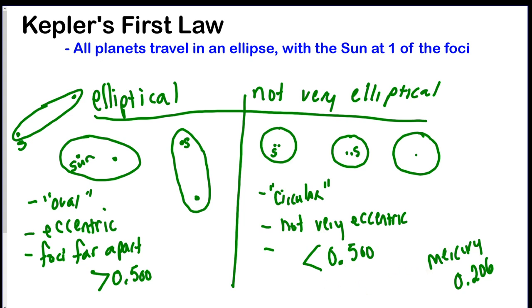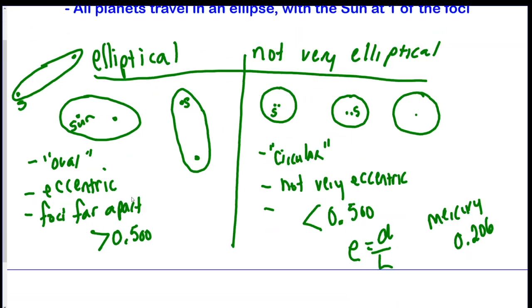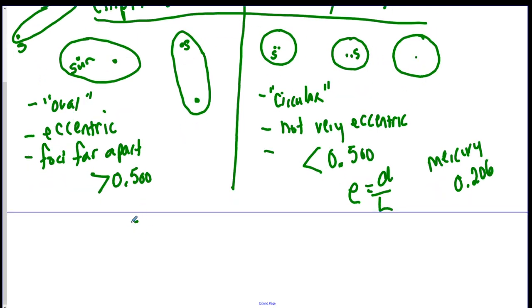Now, there is a formula to calculate eccentricity. It's on the front of your reference table. It's E equals D divided by L. D meaning the distance between the two focal points, and L meaning the length of the major axis, which is the diameter of the ellipse. A little hint that you can use to remember the numbers. The number 0 looks like a perfect circle. So if the number is closer to 0.000, it is more circular. And the number 1 sort of looks like a bubble letter 1, which is very eccentric. So if the number is closer to 0, it's less eccentric. If the number is closer to 1, it's more eccentric.